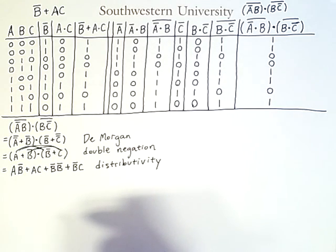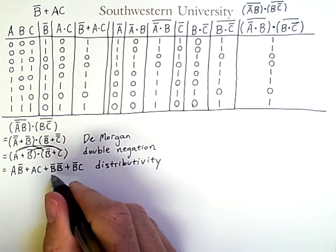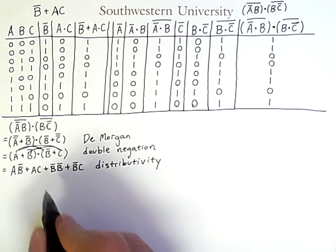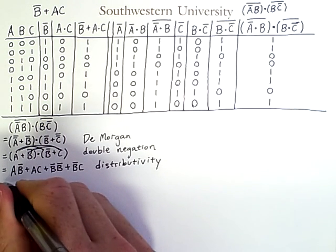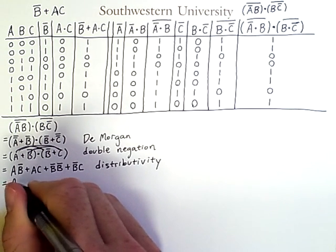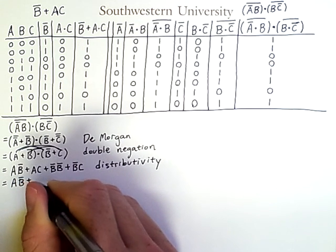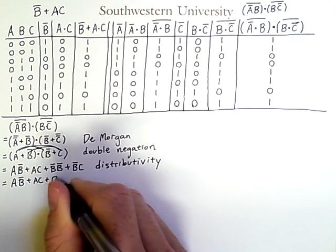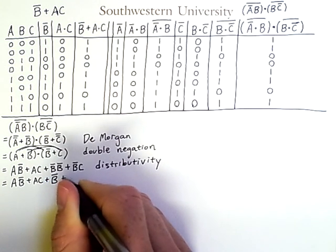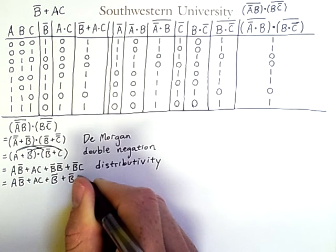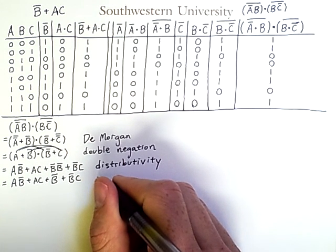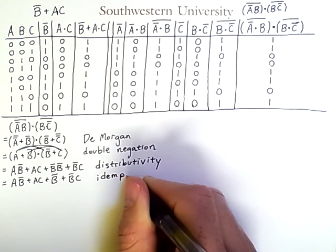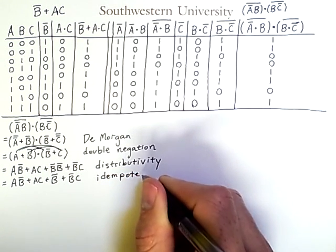Now, from here, I can go forward and eliminate, or rather, reduce this repetition of not-B to simply one occurrence of not-B. The law that allows me to do that is idempotence, which says that if anything is ANDed with itself, it is equivalent to itself.